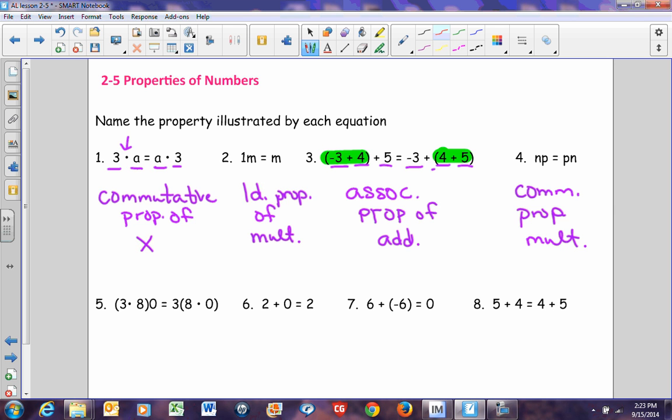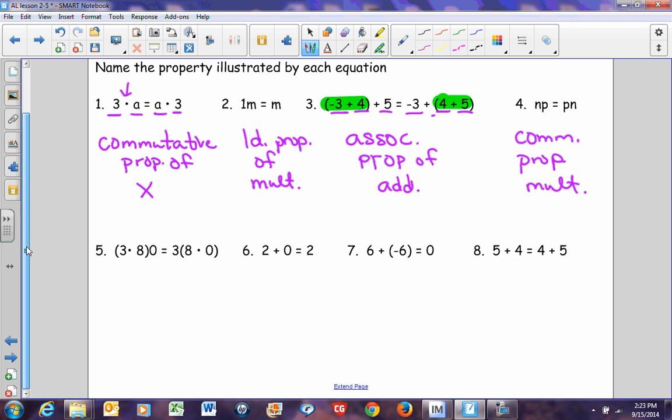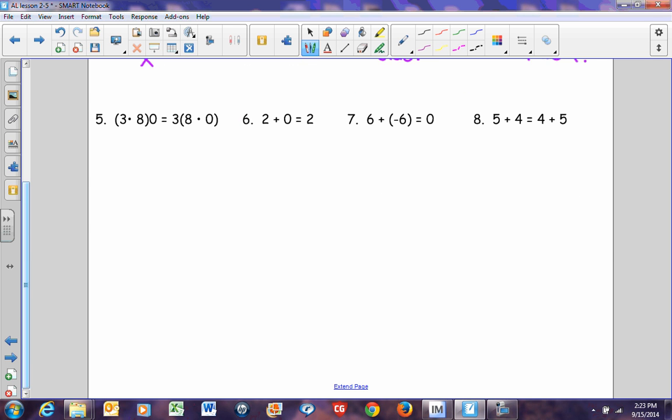Now that's with all these different things of numbers. Now let's look at a few problems that have more numbers than anything else. If we look at number 5, we have 3 times 8 times 0 equals 3 times 8 times 0. At first glance, you might say it's the multiplicative property of 0 because anything times 0 is 0. But not really, because it didn't say 3 times 0 equals 0. This shows you that we have different numbers inside the parentheses. Since we changed the numbers that were inside the parentheses, this is the associative property. And since it was multiplication, it's of multiplication.